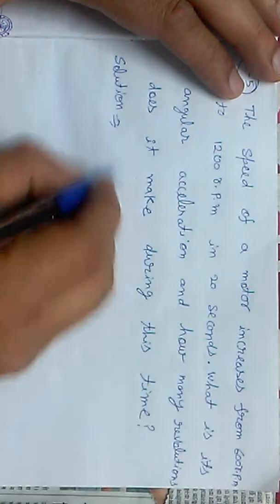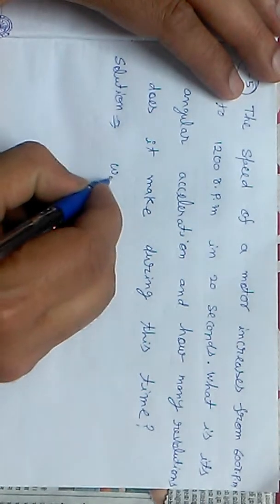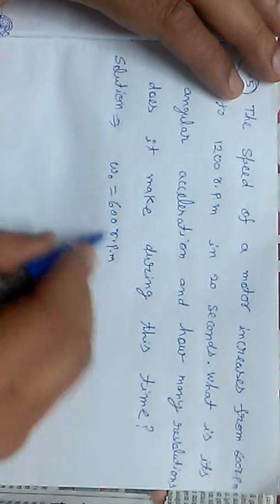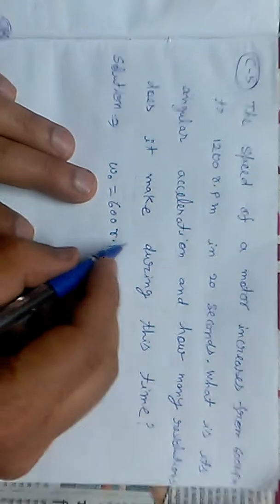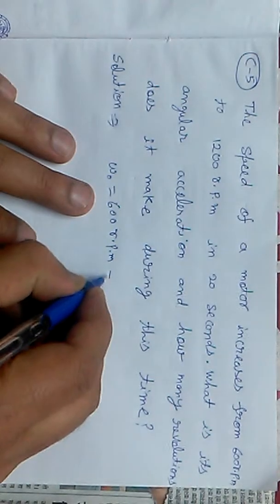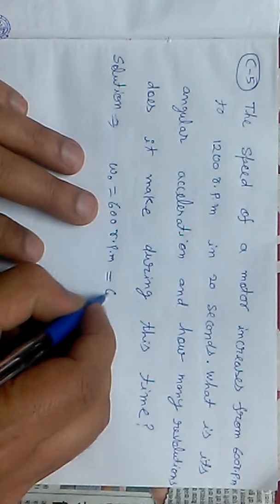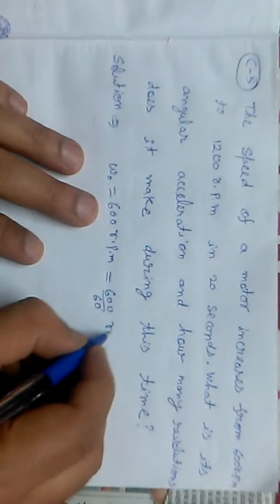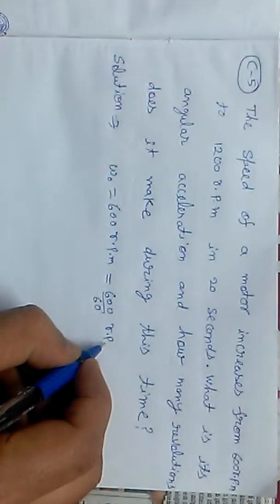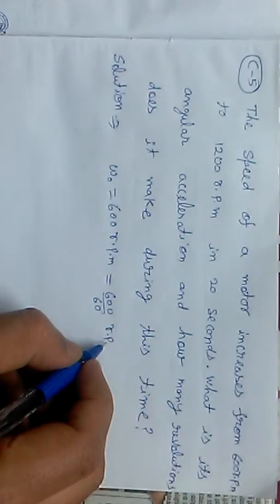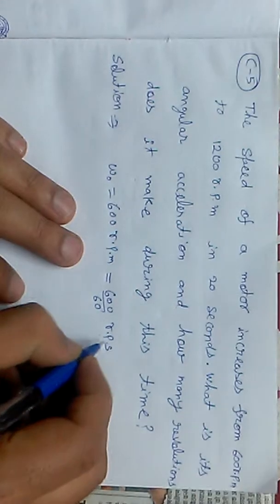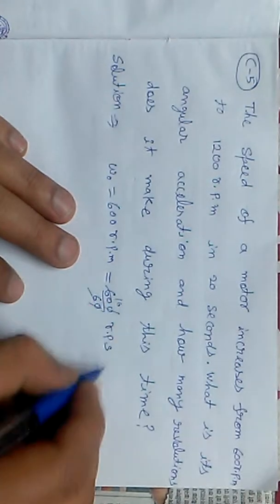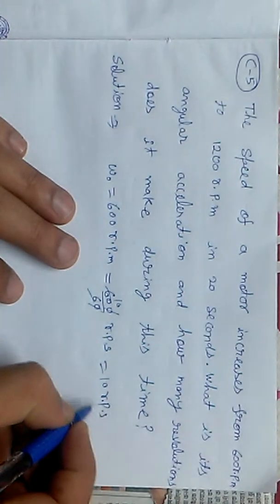The initial velocity, omega not, is 600 rpm, revolution per minute. We need to convert this to SI units. We'll convert rpm to rps, revolution per second. 600 divided by 60 equals 10 rps.